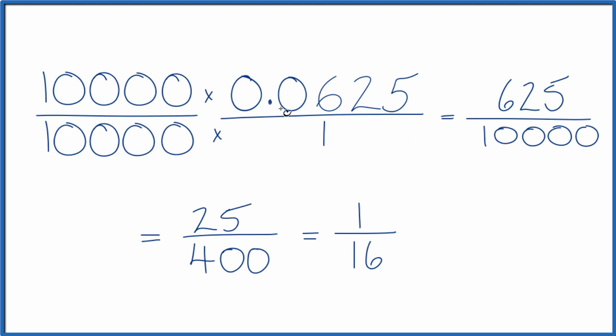What that means is 0.0625, that equals the fraction 625 over 10,000, 25 over 400, or in simplest form, 1 over 16.